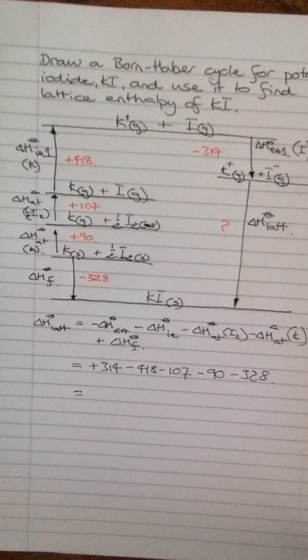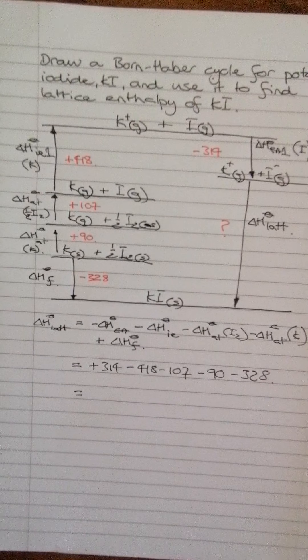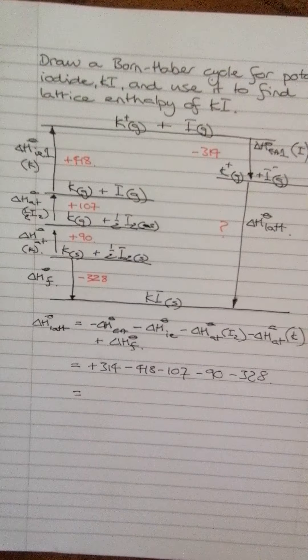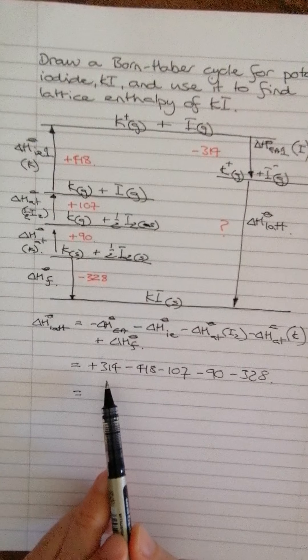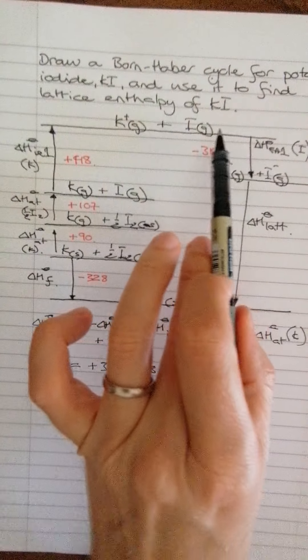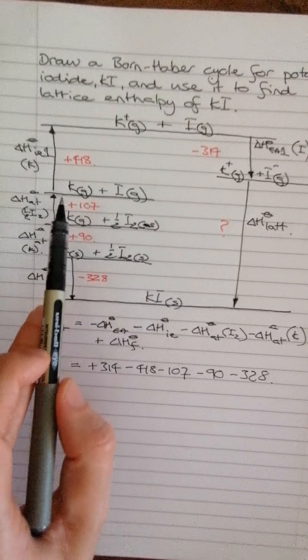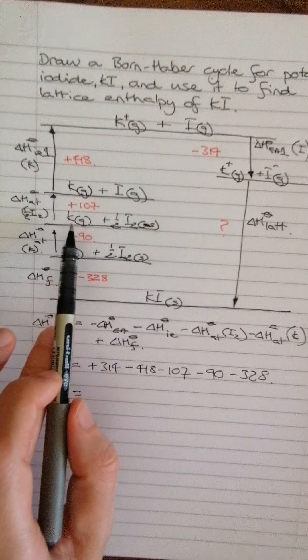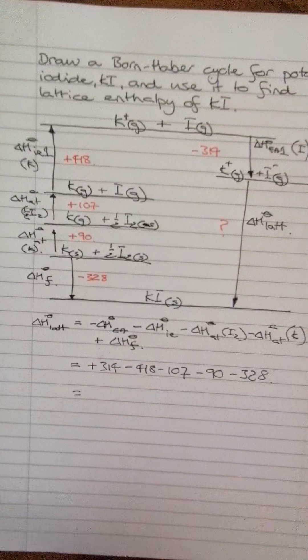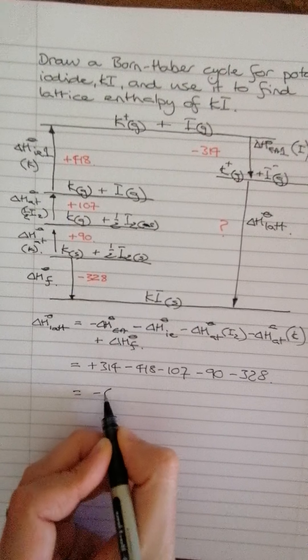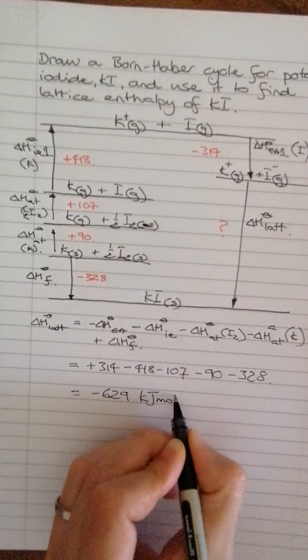Now I need a calculator, which I did not bring one with me. Just give me just a second. That was a bit silly. So I've found my calculator entering all those numbers. So we start with 314. So that's the minus the electron affinity, minus 418, minus 107. We're still going against the arrows there, minus 90. And we go with this one, so it's still minus 328. So the final answer is minus 629 kilojoules per mole.